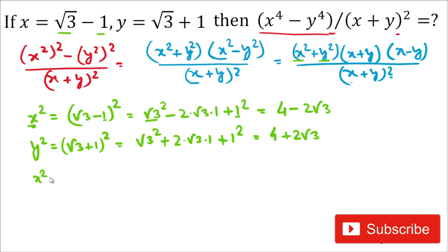Now we calculate x²+y². Adding both terms: (4−2√3) plus (4+2√3). The −2√3 and +2√3 cancel each other out, and we are left with 4+4, so x²+y² = 8.